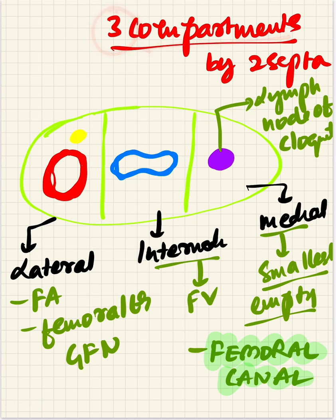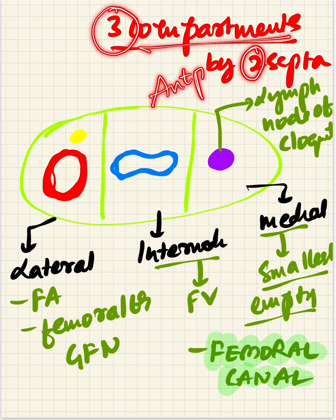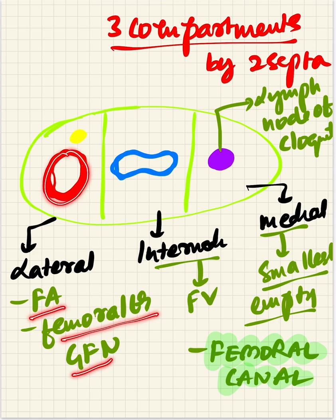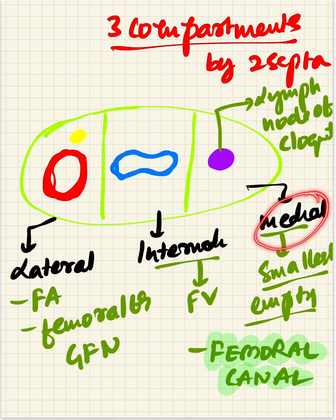The femoral sheath is divided into three compartments by two anteroposterior septa. From lateral to medial: the lateral compartment accommodates the femoral artery and the femoral branch of the genitofemoral nerve; the intermediate compartment contains only the femoral vein; and the medial compartment is the smallest and emptiest, enclosing only a single lymph node - the lymph node of Cloquet.